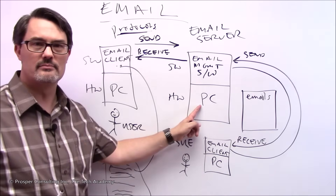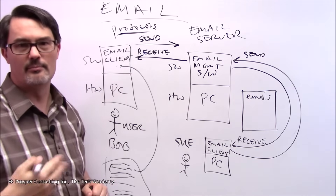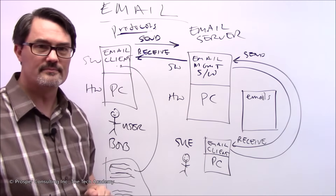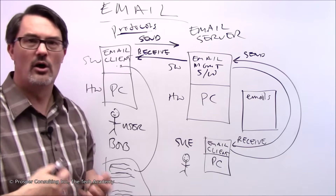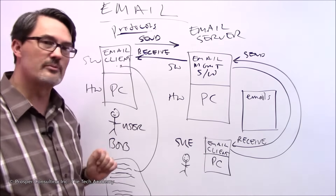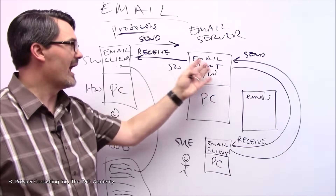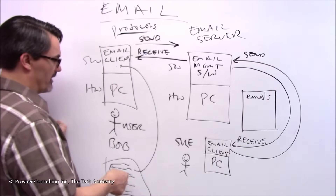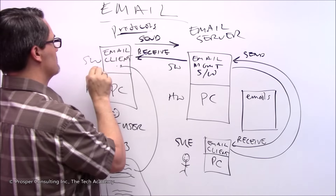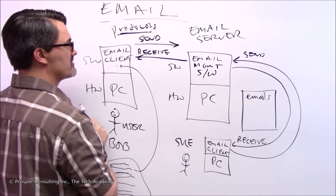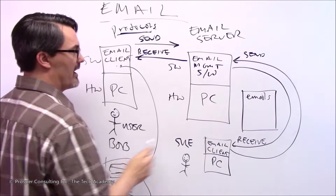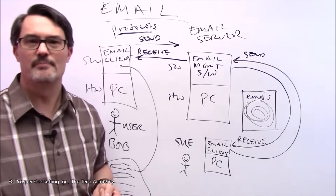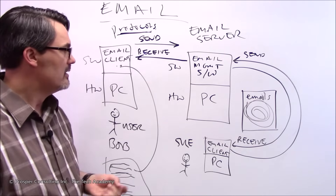He sends it out to another machine called an email server. It's just a computer — it has hardware, a CPU, memory, everything a computer has — and it runs specialized email management software, also called email serving or hosting software. Its job is to manage receiving, storing, and sending out electronic messages. Bob's email about the birthday party gets formatted by the email client and sent to this server, where it sits stored in memory, probably on a hard drive, and waits.